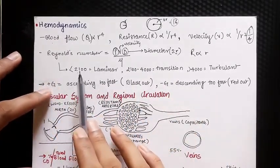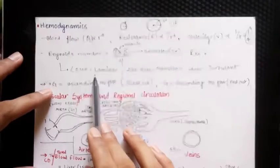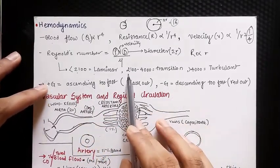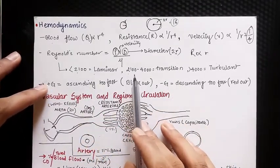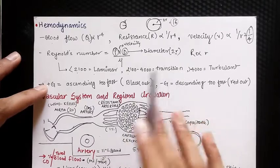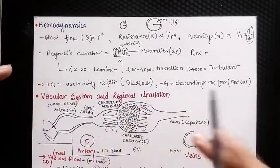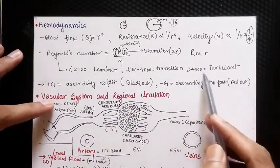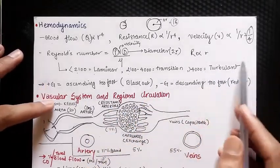If the Reynolds number is less than 2100, the fluid will have laminar flow. If it is between 2100 and 4000, it will be in the transition zone. If it is more than 4000, the flow of the fluid will be turbulent.